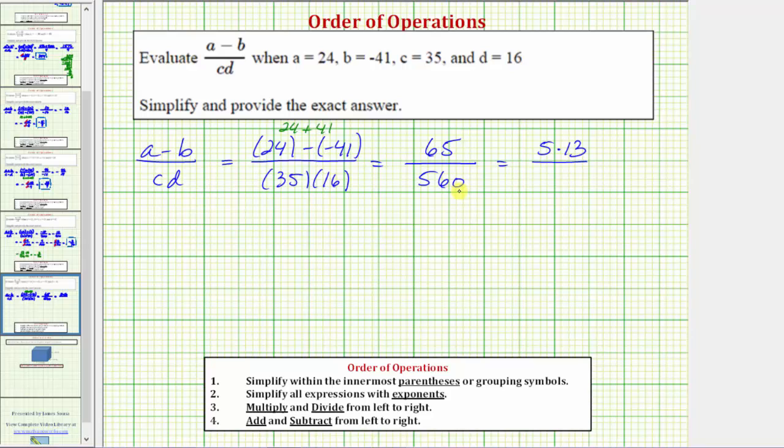And then to write 560 as a product involving five, remember 560 is equal to 35 times 16, and 35 is equal to five times seven. So we could write 560 as five times seven times 16. And now we can see the common factor of five. Five divided by five simplifies to one. So now we have the fraction 13 over seven times 16, which is equal to 112.